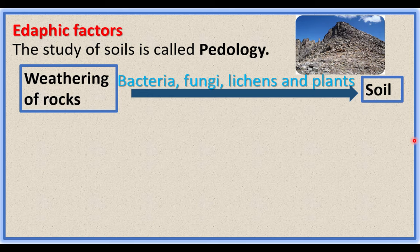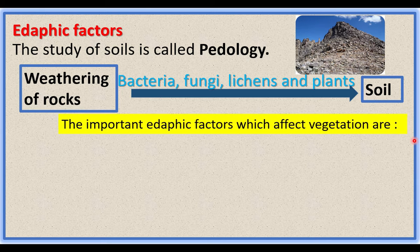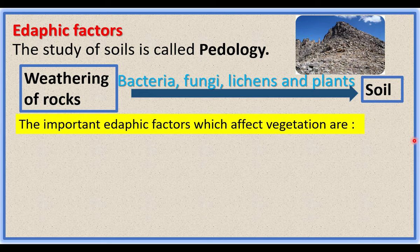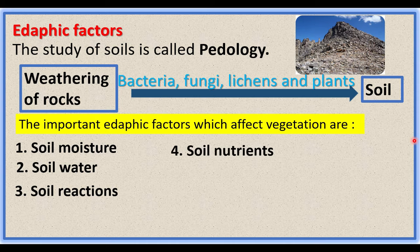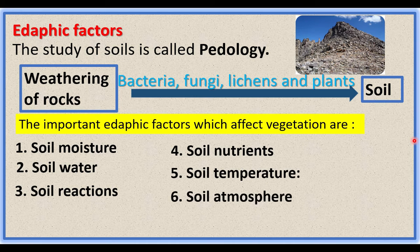Biological weathering is due to bacteria, fungi, lichens, and plants. These organisms produce chemicals and acids that lead to weathering of rocks. The important edaphic factors which affect vegetation are: soil moisture, soil water, soil reactions, soil nutrients, soil temperature, soil atmosphere, and soil organisms.